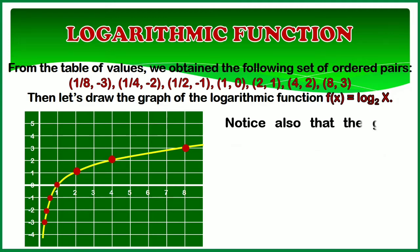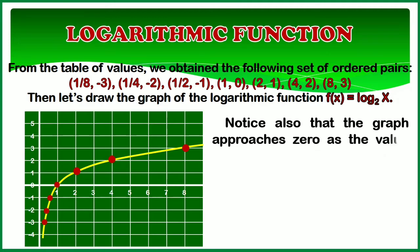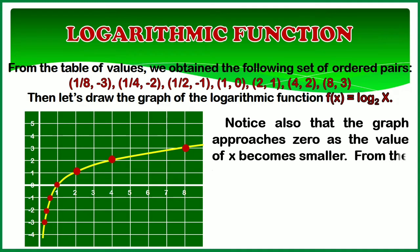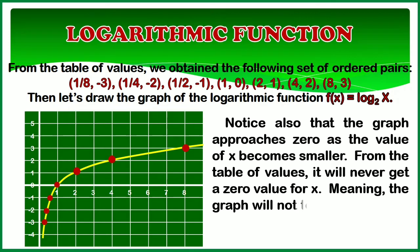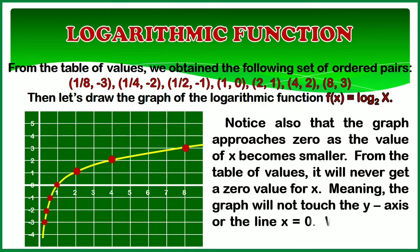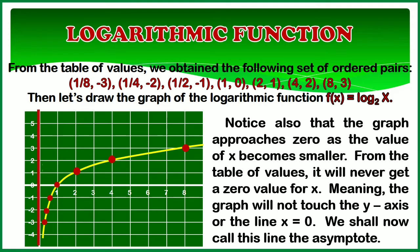Notice also that the graph approaches 0 as the value of x becomes smaller. From the table of values, it will never get a 0 value for x, meaning the graph will not touch the y-axis or the line x equals 0. We shall now call this line the asymptote.